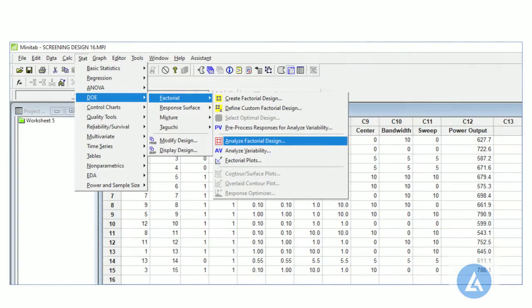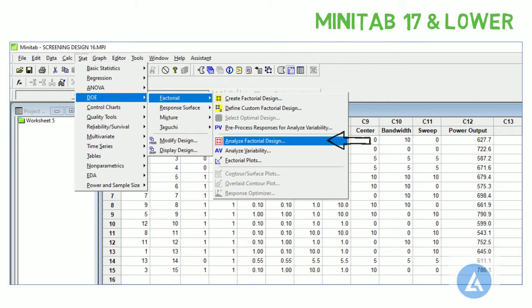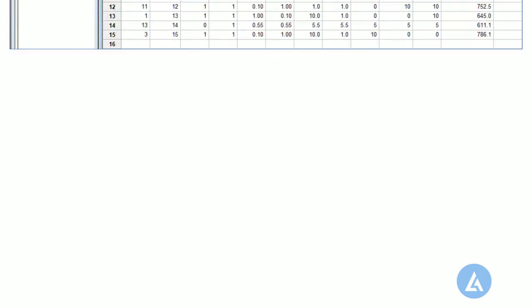If you are using older versions of Minitab like 17, 16 or lower, then there is a little different procedure due to the non-availability of separate option for screening design. In that case, we have to use an option of Analyze Factorial Design.